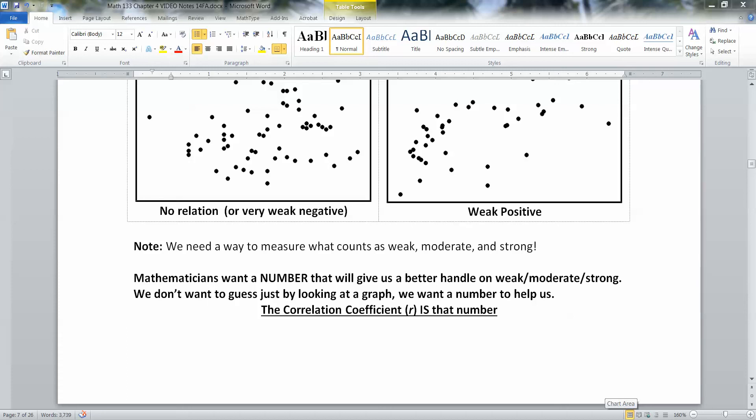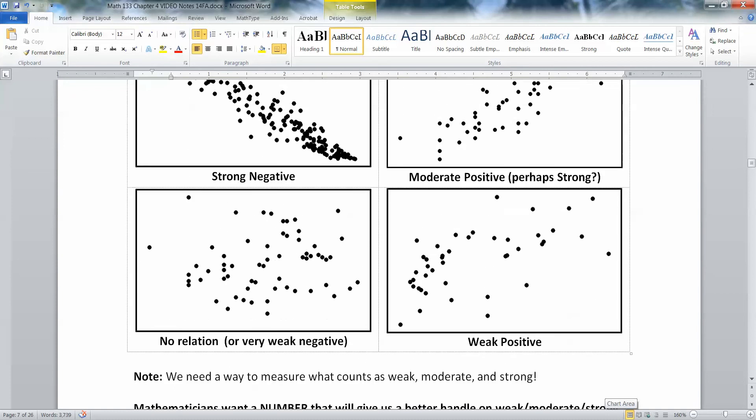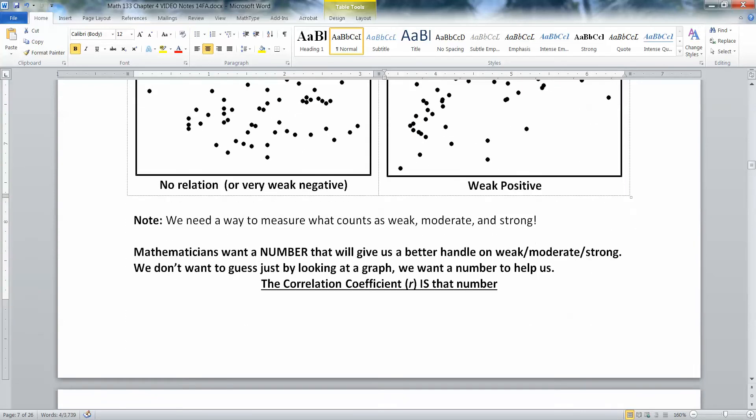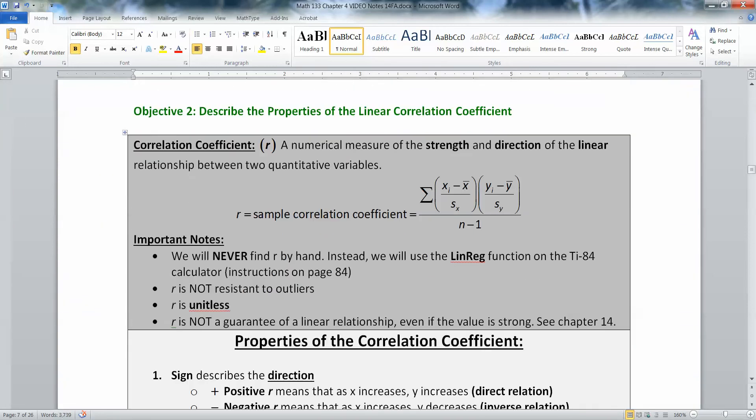We left off in section 4.1 where we discovered that just trying to guess by looking at a graph or scatter diagram whether a relationship is moderate or strong is not great. You can kind of do it, but how would I know if this is really moderate or really strong? You don't really know. So we wanted a number that would help us make those decisions, and that's what the correlation coefficient is.